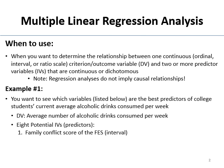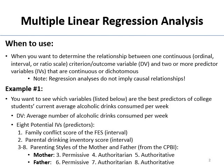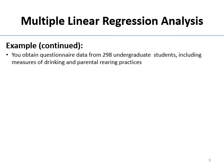There's the family conflict score of the family environment scale — how much conflict there was in their family, and it's interval. Their parental drinking inventory score, also interval. Then variables three through eight are different parenting styles of both the mother and the father from the CPBI. For the mother, you have three sub-skills: permissive, authoritarian, and authoritative. And then you have those same ones for the father. We want to know which combination of these things is the best predictor of how much college students drink.